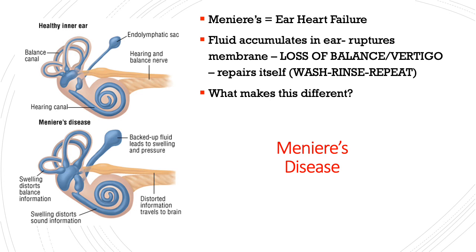Comparatively, otosclerosis was really focused on hearing — balance isn't a major problem there. Meniere's disease has a mix of both. Think of Meniere's disease as ear heart failure. It's not well understood, but fluid accumulates in the ear causing a rupture of the lymphatic membrane, which causes loss of balance and vertigo. The membrane eventually repairs itself, and then — wash, rinse, repeat — this happens over and over again in attacks or exacerbations.